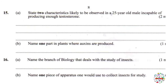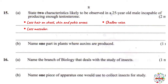Question 15, part A: state two characteristics likely to be observed in a 25-year-old male incapable of producing enough testosterone. Essentially, what are the effects of insufficient testosterone? Testosterone is an androgen — a male hormone responsible for masculine characteristics. The male will have a chest that is less hairy, less hair in different parts of the body such as the chin, armpits, and pubic area. He will also be less muscular, have smaller testes, a smaller penis, and reduced sperm production.